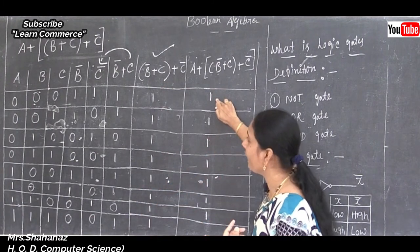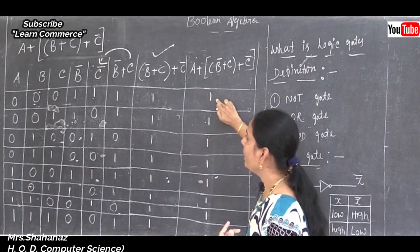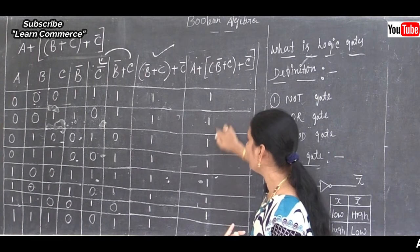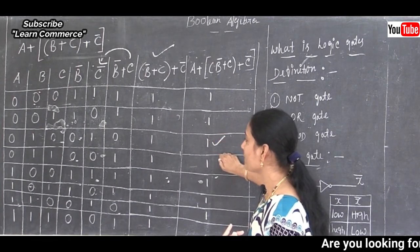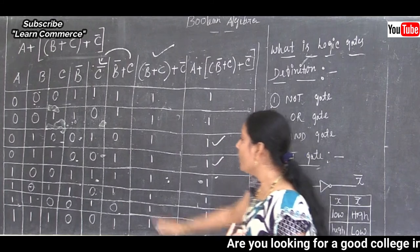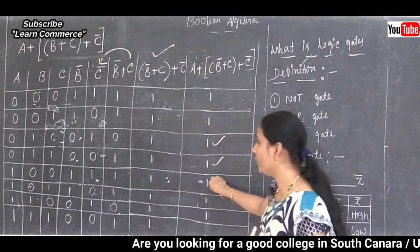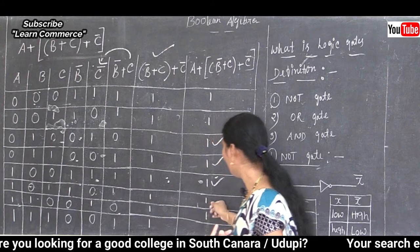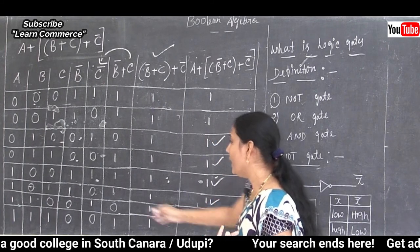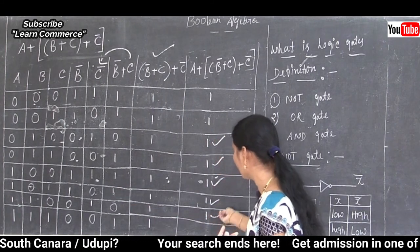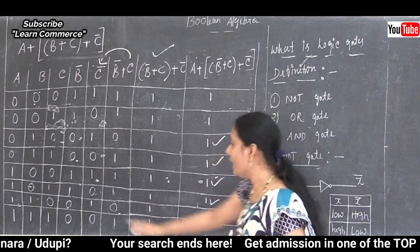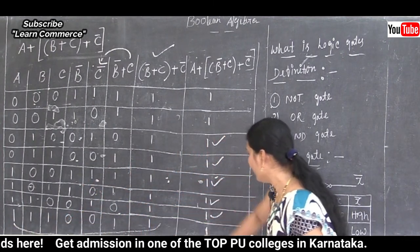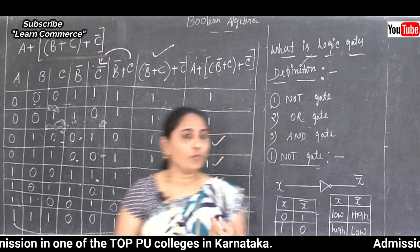Adding A with (complement B plus C plus complement C): 0+1=1, 0+1=1, 0+1=1, 0+1=1, 1+1=1, 1+1=1, 1+1=1, 1+1=1. All row values are 1.